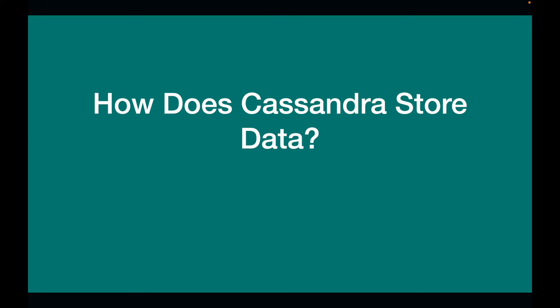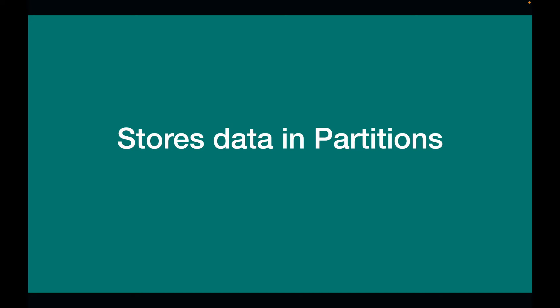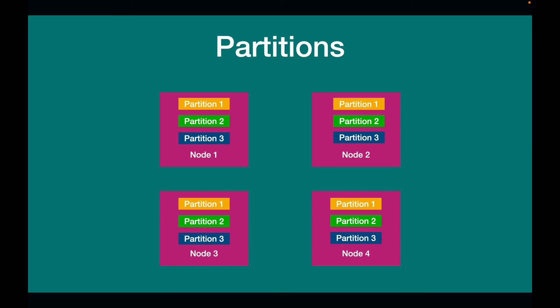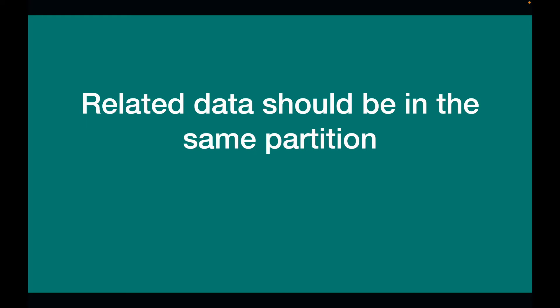How does Cassandra store data? Cassandra stores data in something called partitions — think of a partition like a file within a system. Related data is stored in a single partition, so the most atomic unit in a Cassandra database is a partition. In a four-node Cassandra setup, each node can have multiple partitions where your data lives. Related data should be in the same partition. When you design a Cassandra database, you want to make sure that related data ends up in the same partition to make your queries quicker.